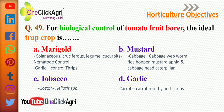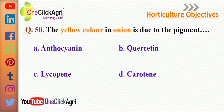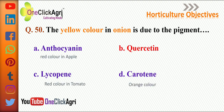The next question: the yellow color in onion is due to the pigment quercetin. The rest of the options have already been discussed.